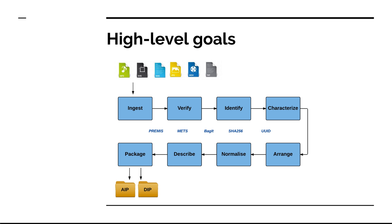These are some of the other actions preservationists take and care about while preparing these items. First, we ingest — so we take in all the files we wish to preserve. Then we verify that the files are what they claim to be and we perform identification actions on those files. Then we want to characterize these files. This step is also known as metadata extraction, and we're gathering information about the files and storing them.